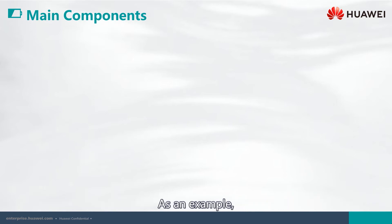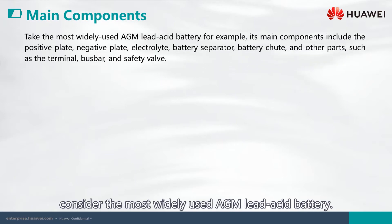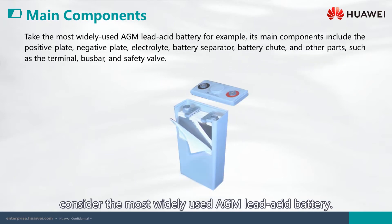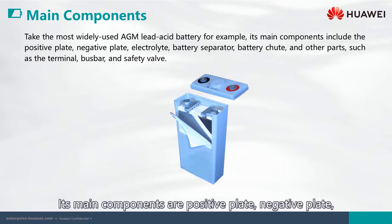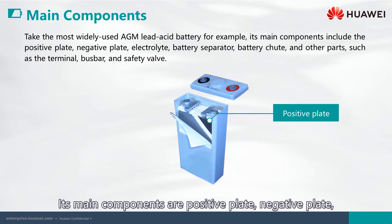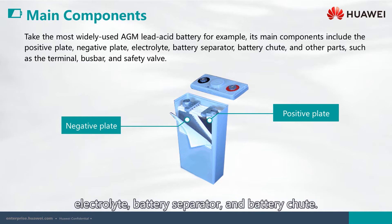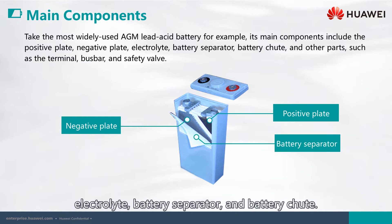As an example, consider the most widely used AGM lead-acid battery. Its main components are a positive plate, negative plate, electrolyte, battery separator, and battery chute.